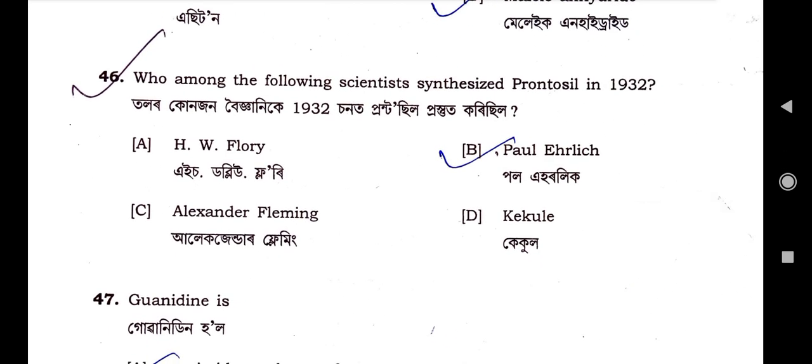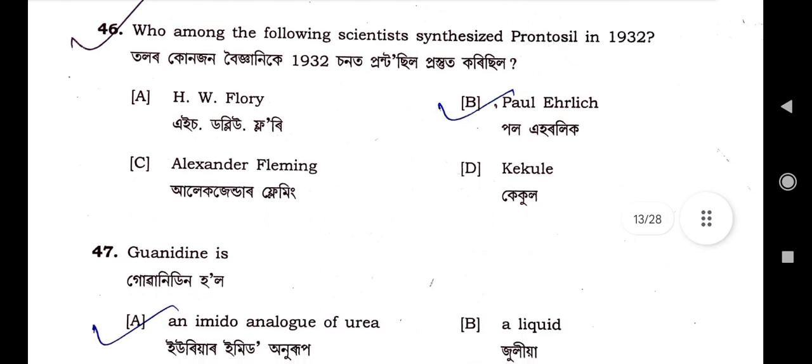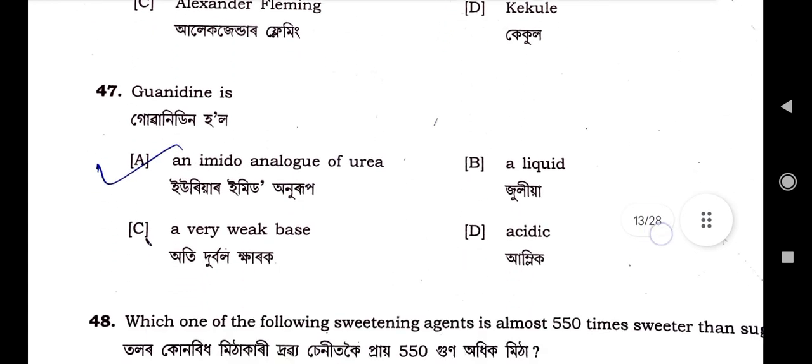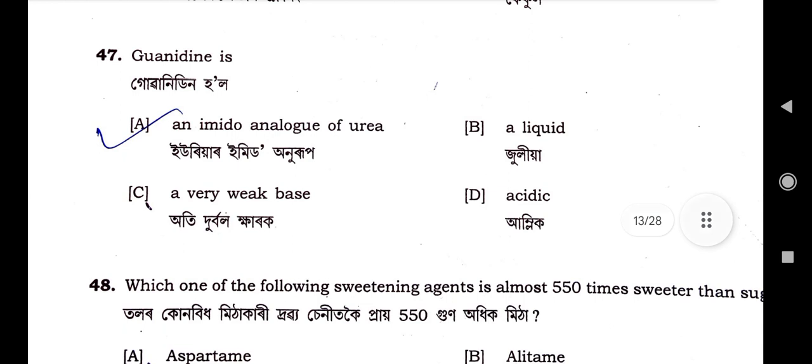Question number 46: Who among the following scientists synthesized prontosil in 1932? Option B is the correct option — Paul Ehrlich. Option A, H.W. Florey, is wrong; options C and D are also wrong. Question number 47: Guanidine is an amido analog of urea. Option A is the correct option; others are wrong.